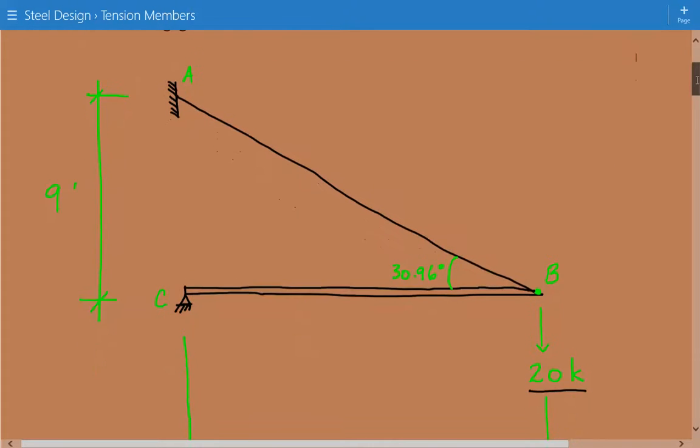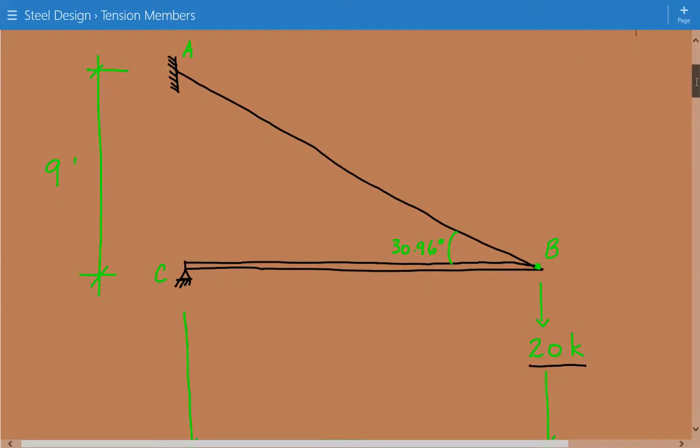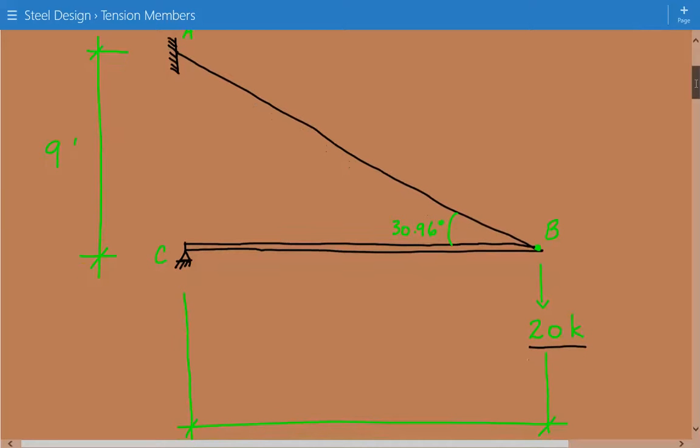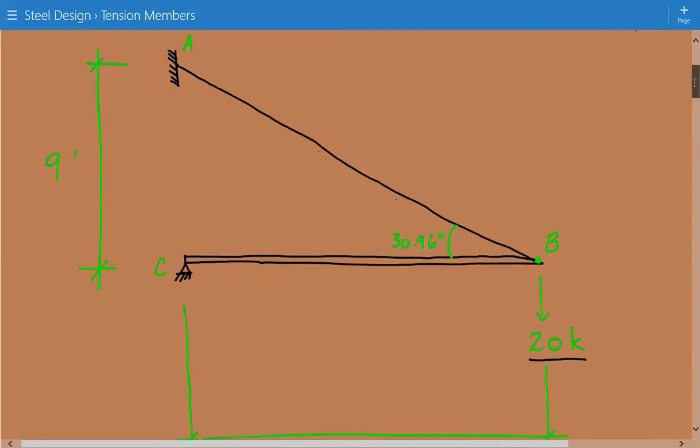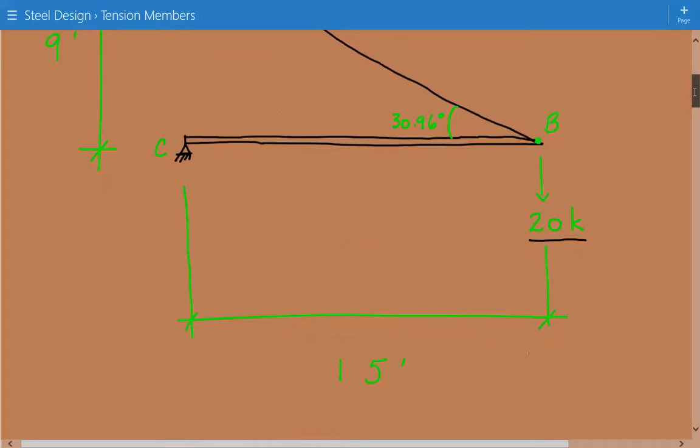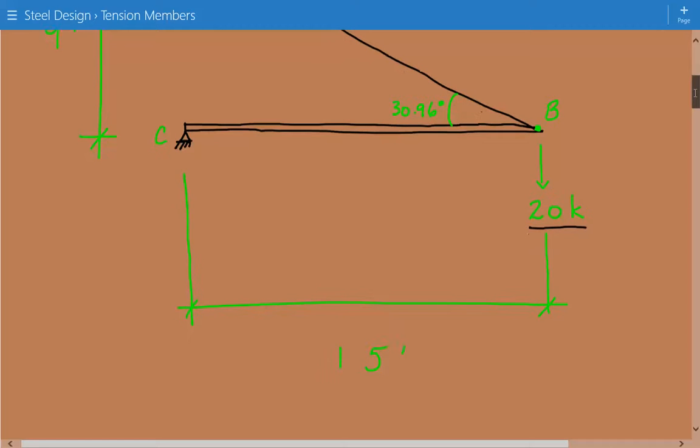So here's our figure, and we have a 20 kip live load applied at joint B, and BC, the weight is negligible, and we need to find the threaded rod size for AB. The vertical distance from A to C is 9 feet, and the horizontal distance from B to C is 15 feet.